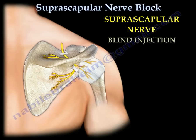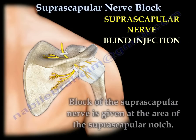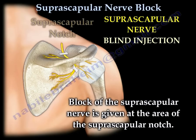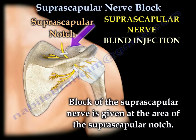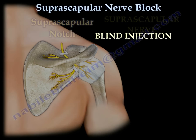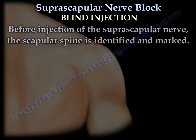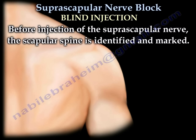In the blind injection, the block is given at the area of the suprascapular notch. Before injection of the nerve, the scapular spine is identified and marked.